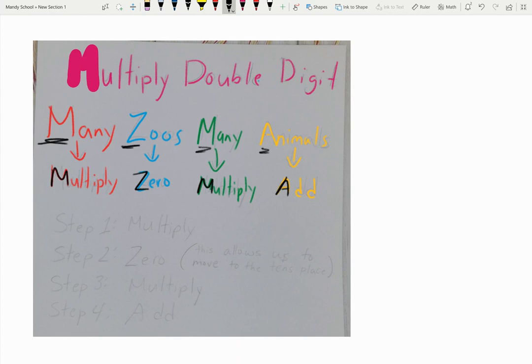So what we're going to be doing are four steps. We're going to have a step one, a step two, a step three, and a step four. Whenever you do a double digit multiplication, you'll have your four steps.